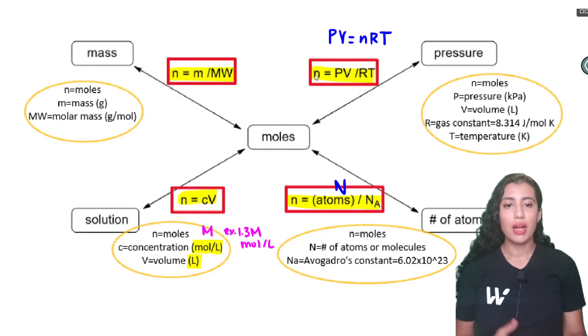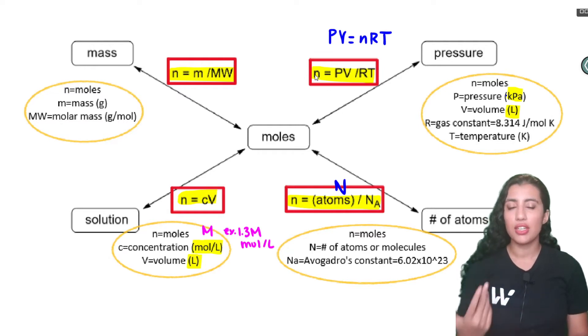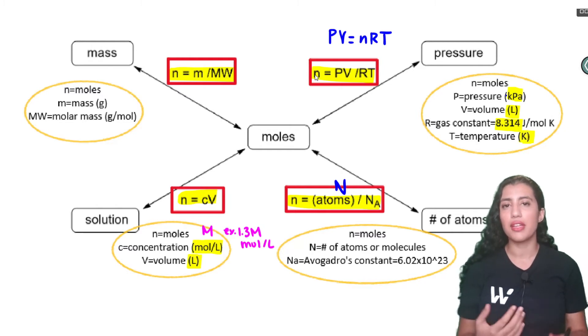So in this equation, n is still equal to moles. Pressure is going to be in units kilopascals. Volume is still going to be in liters. R is just a constant and it should be memorized. It's 8.314. You don't have to really worry about memorizing those units but definitely make sure you memorize that number and then T is your temperature and it has to be entered in Kelvin if we come across a problem like that.